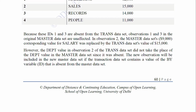Because IDs 1 and 3 are absent from the transaction dataset, in observation 2, the master dataset's $9,000 corresponding value for salary was replaced by the transaction dataset's value of $15,000. However, the department value in observation 2 of the transaction dataset did not replace the department value in the master dataset since it was absent. The new observation will be included in the new master dataset if the transaction dataset contains a value for variable ID that is absent from the master dataset.